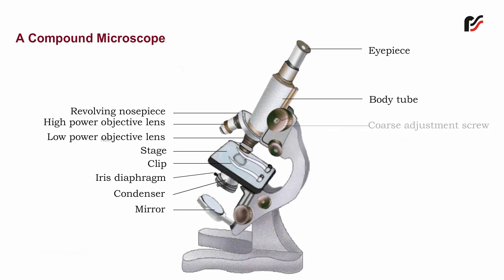Coarse Adjustment Screw: This can move the body tube up and down for focusing. Fine Adjustment Screw: This is a small size screw needed for fine adjustments.